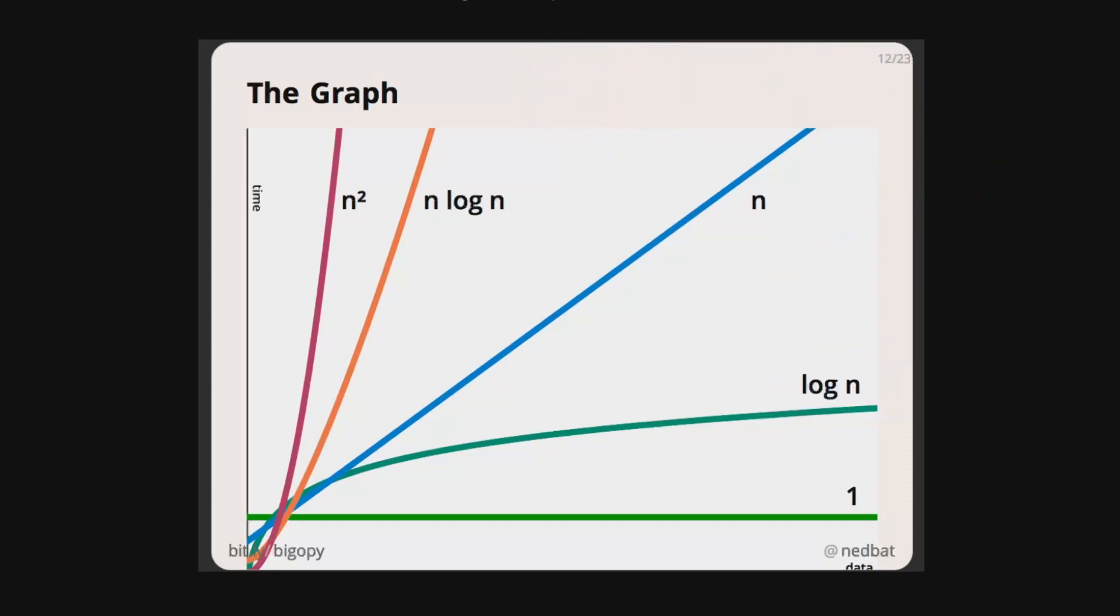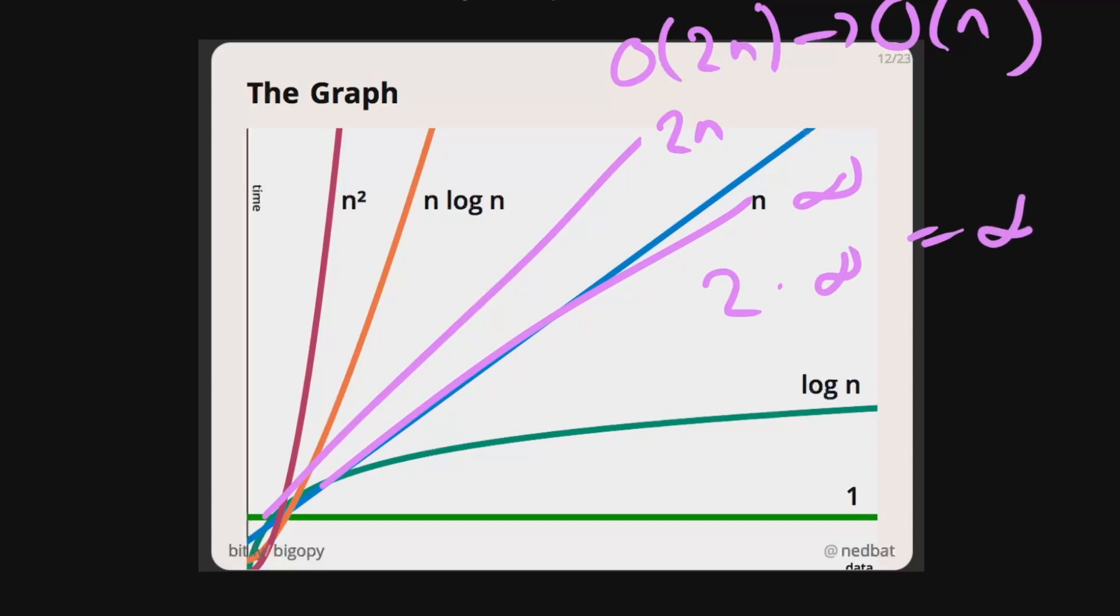The other main rule is that if you had a constant, say 2 of n, then this gets dumbed down to O(n). Because you can see that as this tends towards infinity, 2 times infinity is basically the same as infinity.